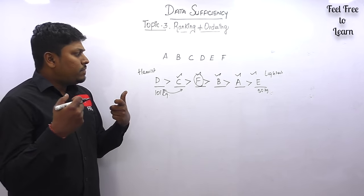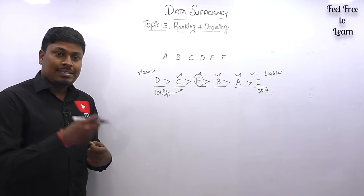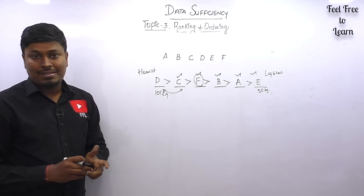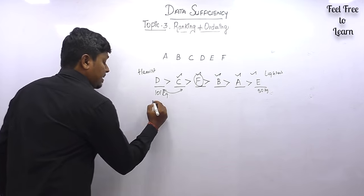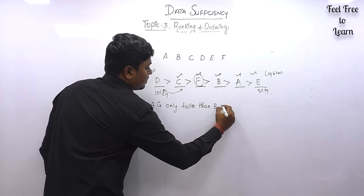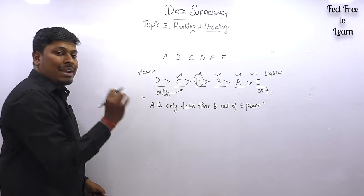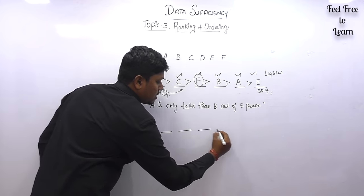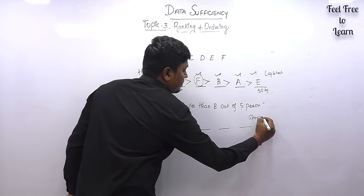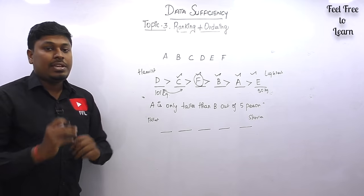If you don't know the basics, it is really difficult to solve a question. Just take your books, look into the topic ranking and ordering, read the first four or five pages — definitions and everything — and you'll understand. For example: 'A is only taller than B out of five persons.' We make five places — tallest to shortest — and A is only taller than B, meaning A should be placed second from the bottom.